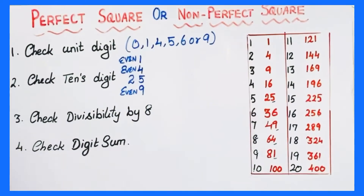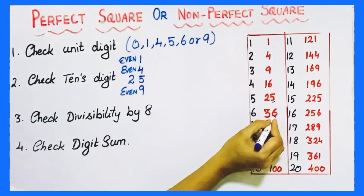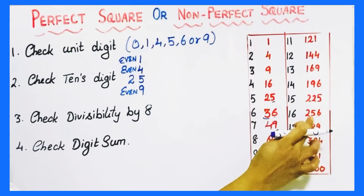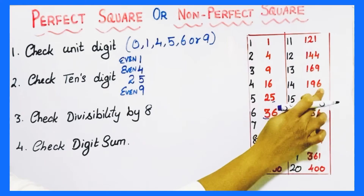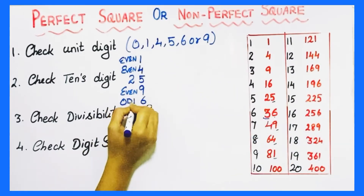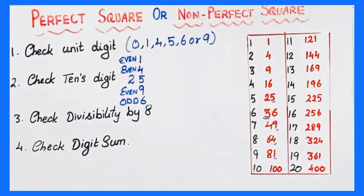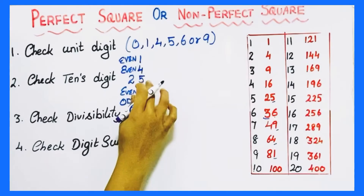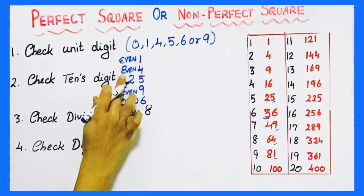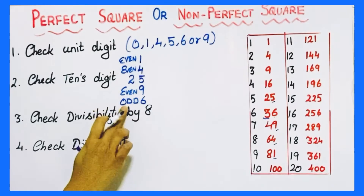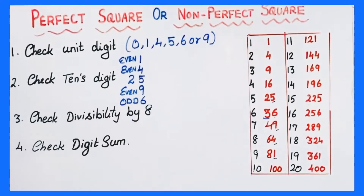And if the unit digit is 6, the tens place will be an odd number. So to summarize: if the unit digit is 1, 4, 5, or 9, the tens place is an even number. And if the unit digit is 6, the tens place will be an odd number. That is the speciality of a perfect square number.